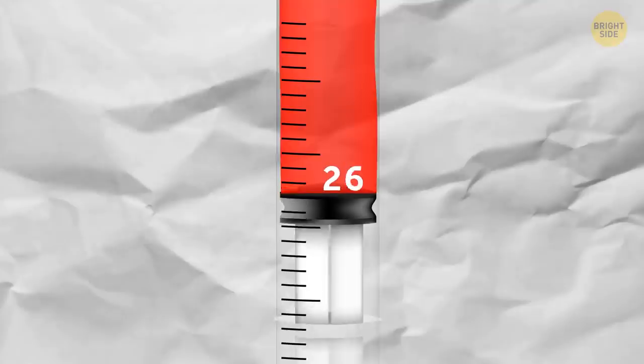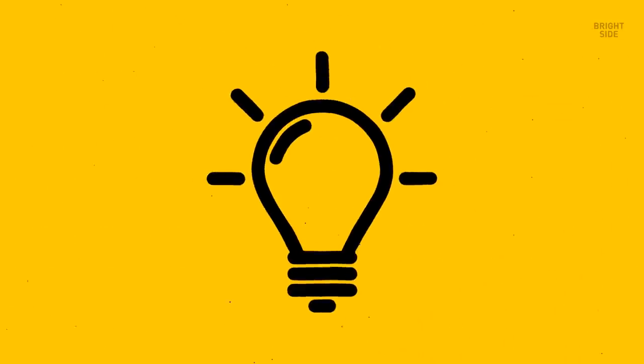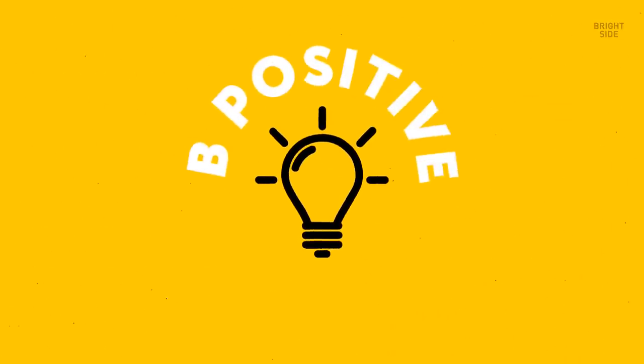We used to think that there were just 8 different blood types, but in reality, there are over 30 known blood group systems. Here on The Bright Side, our favorite blood group is B-positive. Get it?